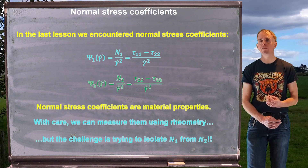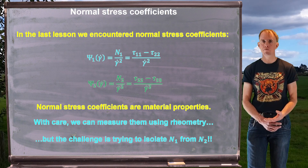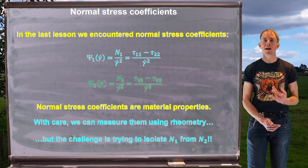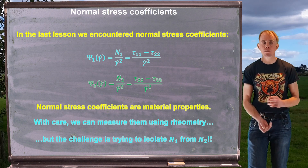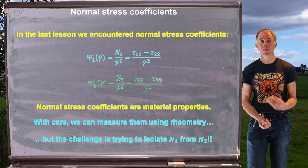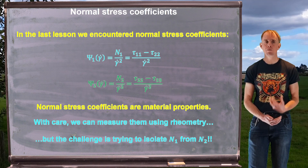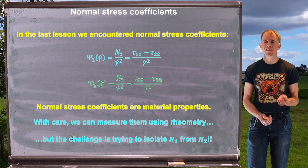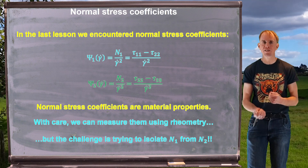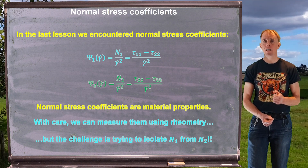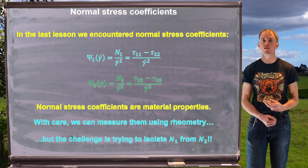Normal stress coefficients are material properties, just as viscosity is a material property, so we should be able to measure them with rheometry. A little care is needed, however, because what is perhaps not obvious at first sight is the relative magnitude of these two quantities: Ψ₁ is a lot greater than Ψ₂. We can measure Ψ₁ (and hence N1) relatively straightforwardly, but measuring N2 is quite difficult because usually we can't isolate N2 from N1 — and with measurement noise, this becomes very hard given that N2 is a lot smaller.